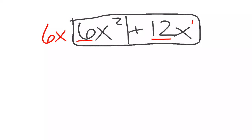What times 6x is 6x squared? That would be x. What times 6x is 12x? 2. So my answer would just be 6x times x plus 2.